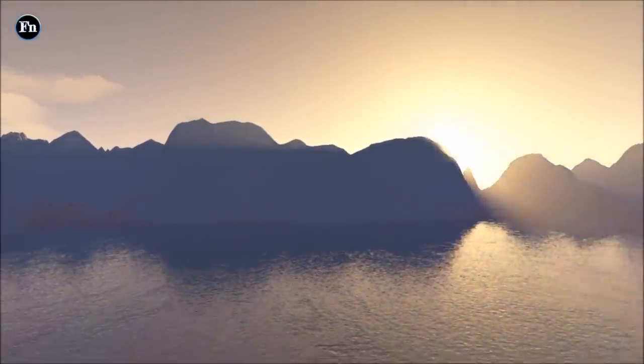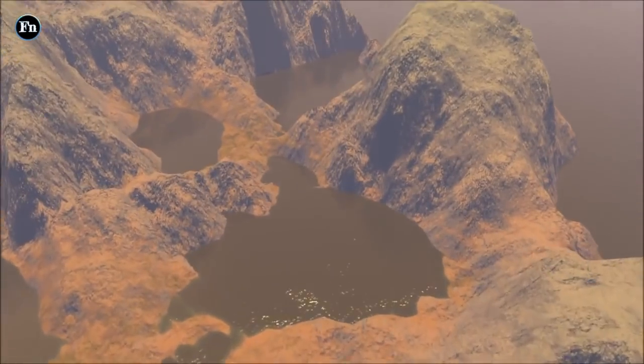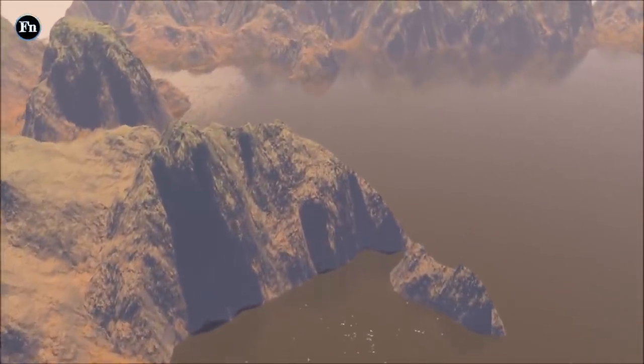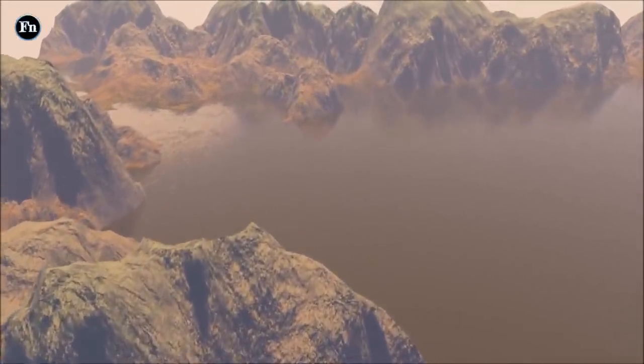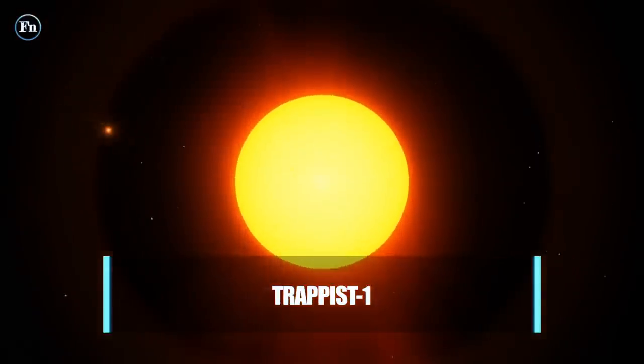With an Earth-like greenhouse effect, the surface temperature is about 19 Fahrenheit. Still, since the planet is so massive, the greenhouse effect may be even higher. Number 3: TRAPPIST-1.